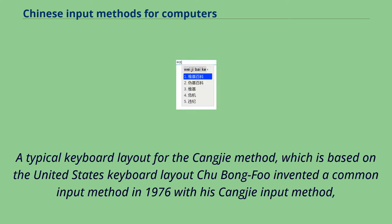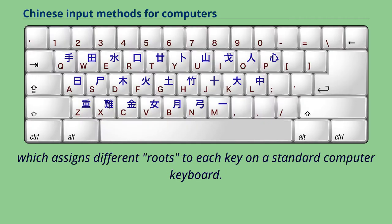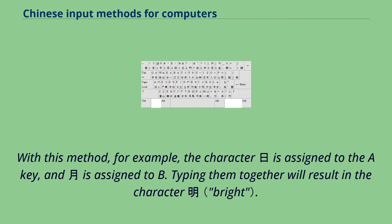A typical keyboard layout for the Cangjie method is based on the United States keyboard layout. Chu Bong-fu invented a common input method in 1976 with his Cangjie input method, which assigns different roots to each key on a standard computer keyboard. With this method, for example, one character is assigned to the A key, and another is assigned to B; typing them together will result in a third character.